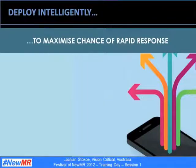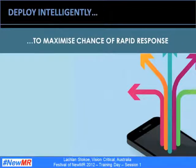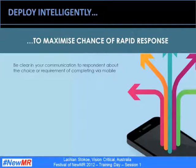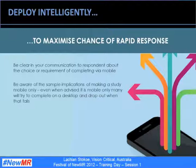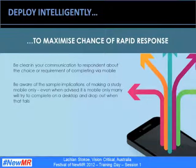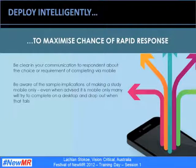This leads to my final point about deploying intelligently to maximise the chance of getting a rapid response. We all know how quickly our inboxes fill with emails during the day — it is particularly bad on mobiles where people often have multiple email accounts. You should explicitly tell people in your communication whether or not they have the choice, or if it is a requirement that they complete via a mobile device. In that study across Canada and the UK, around 40% tried to complete using the wrong device and then dropped out.